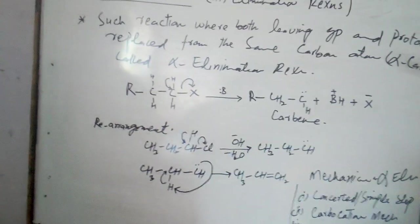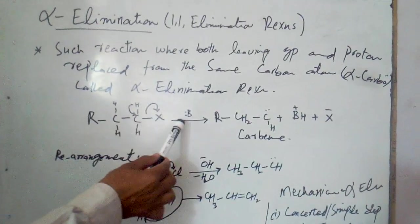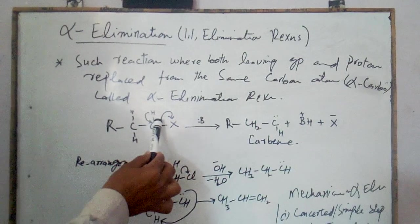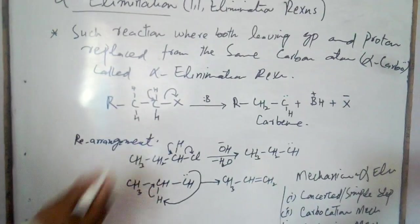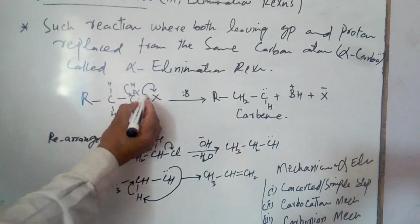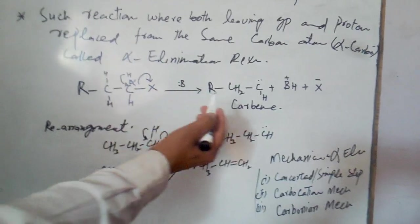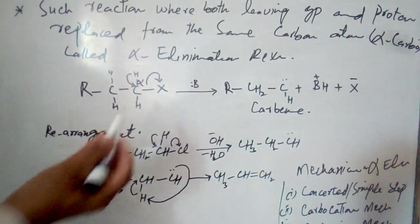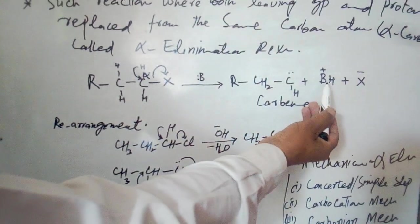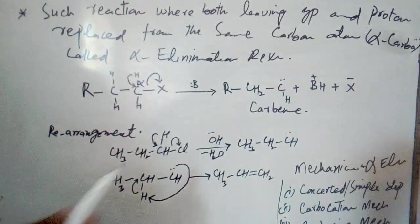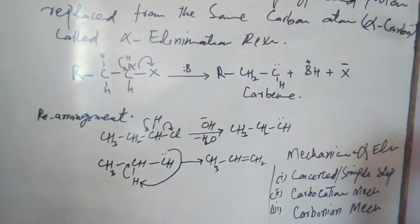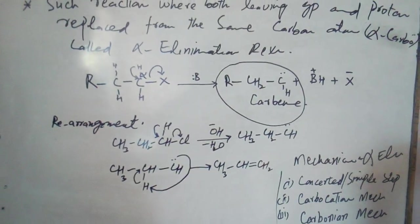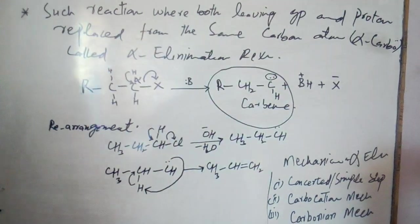This is an example of alpha elimination reactions. Here the proton is replaced by a base, and the leaving group is replaced. As a result of the alpha elimination reaction, we get a product called a carbene. The carbene is a reactive reagent, also called a reactive carbene.